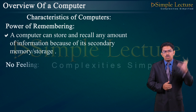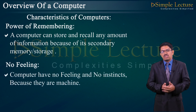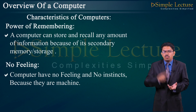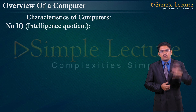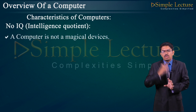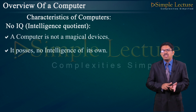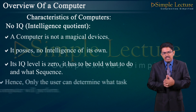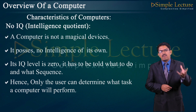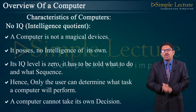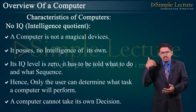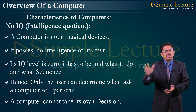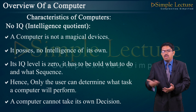No feeling: computers have no feeling and no instincts because they are machines — all work is done exactly without emotion. No IQ: a computer is not a magical device; it has no intelligence of its own. Its IQ level is 0. It has to be told what to do and in what sequence. The user determines what task a computer performs — a computer cannot take its own decisions.